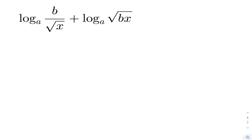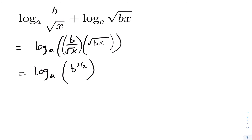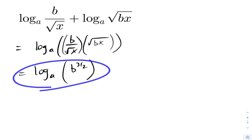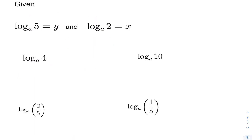For the next question, we have log base a of b over the square root of x plus log base a of the square root of bx. Combining these using the product rule, the square roots cancel on the top and bottom and we're left with b to the power of three halves. We can drop the three halves to a root if desired, but we've expressed this as a single logarithm.